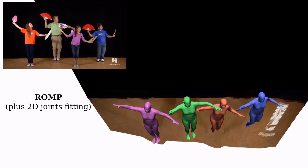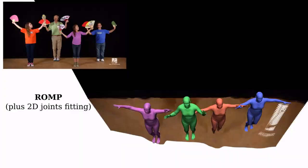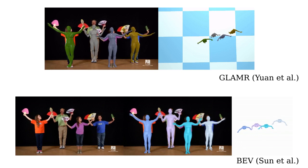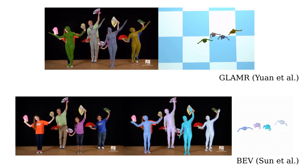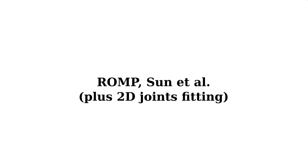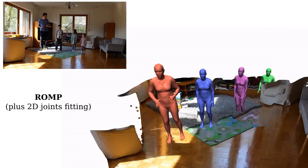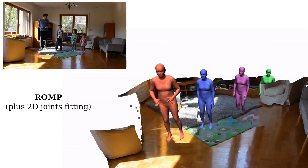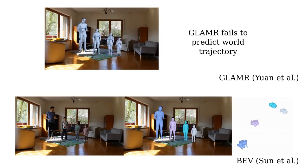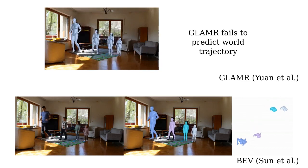We further show additional comparisons in challenging videos with humans of mixed sizes. Note how GLAMR fails to predict a coherent 3D position of the humans, and how BEV fails to estimate the height of each person in the scene.